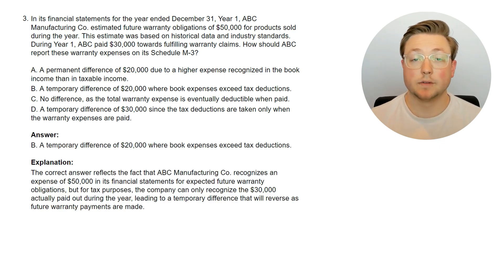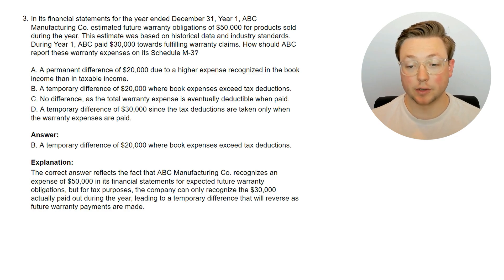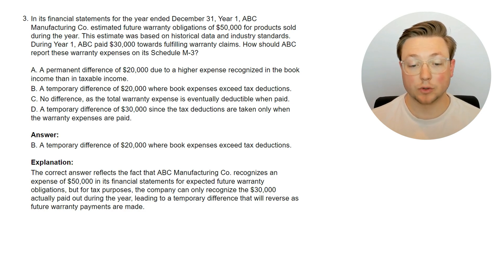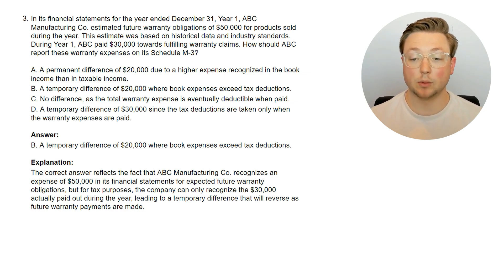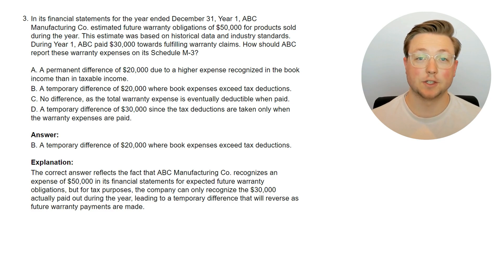The answer is a temporary difference of $20,000 where book expenses exceed tax deductions. ABC Manufacturing recognizes an expense of $50,000 in its financial statements for expected future warranty obligations, but for tax purposes the company can only recognize the $30,000 actually paid out during the year, leading to a temporary difference that will reverse as future warranty payments are made. Similar to the first question, warranty expenses can only be deducted on the tax return when they're actually paid.